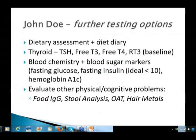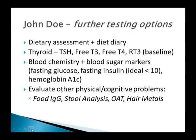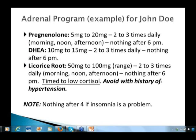For John Doe, do a dietary assessment, check thyroid — TSH, free T3, free T4, possibly reverse T3 as a baseline. Blood chemistry including fasting glucose, fasting insulin (want it less than 10), and hemoglobin A1C. Also organic acid testing, stool testing, and food IgG testing to round out the picture. From an adrenal standpoint, start with pregnenolone 5 to 10 milligrams two to three times a day — morning, noon, and afternoon — to give a steady state level supporting the erratic cortisol throughout the day. Avoid pregnenolone after 6 p.m. to not interfere with sleep.